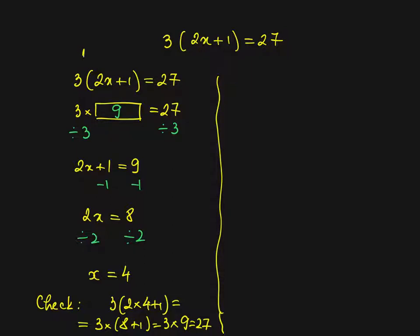Method 2. If I didn't see that I can divide by 3 I can open the bracket. 6x plus 3 equals 27. Take away 3 on both sides. 6x equals 24. Divide by 6. So x equals 4. Same answer. I can check and I see that it verifies the equation. So it's a correct solution.